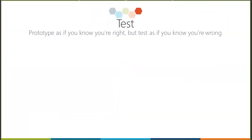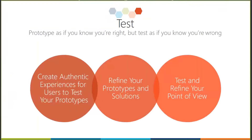In the test phase, we are looking to test as if we're wrong in the solution we're trying to provide. When you prototype, you prototype as if you know your idea is right, but you test as if you know your idea is wrong so that you can get that user feedback to make sure that this really does solve the problem they're having. In the test phase, you want to create authentic experiences for your users to test your prototypes.